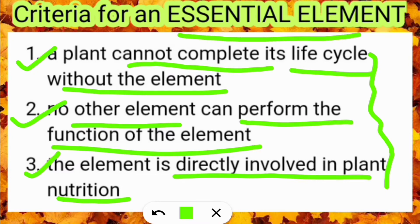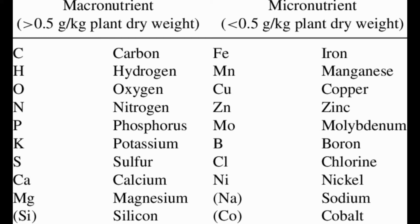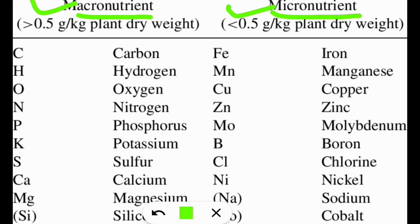Let's see what are their names. This is the list of all the 20 essential elements for a plant. These 20 elements are divided into two major categories: macronutrients and micronutrients. Macronutrients are the nutrients which are required in more amount in the plant, and micronutrients are required in less amount. Macronutrients constitute about greater than 0.5 gram per kg of the plant dry weight, but micronutrients constitute about less than 0.5 gram per kg of the plant dry weight.